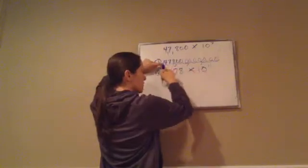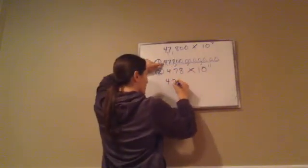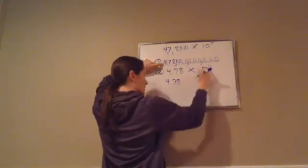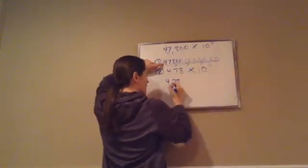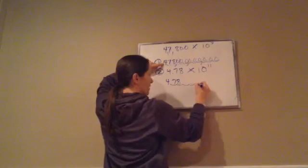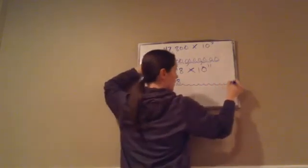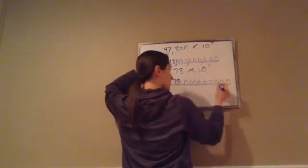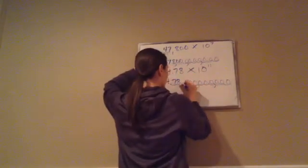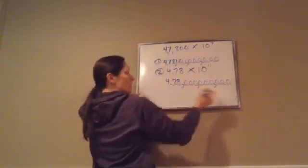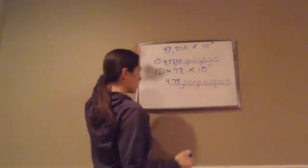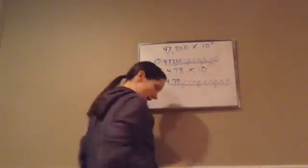Let's check it: 4.78 times 10 to the positive 11, going to the right 1, 2, 3, 4, 5, 6, 7, 8, 9, 10, 11 — filling in zeros — gives 478 billion. We are correct, final answer. That is Lesson 74.